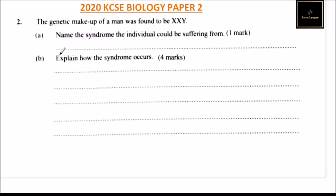This is question number two. It says the genetic makeup of a man was found to be XXY. Name the syndrome the individual could be suffering from. The syndrome is known as Klinefelter's syndrome. This is a genetic condition in which a male is born with an extra copy of the X chromosome. As you can see, they are supposed to be X and Y but we have an extra one. It is not inherited but it is a random genetic error.